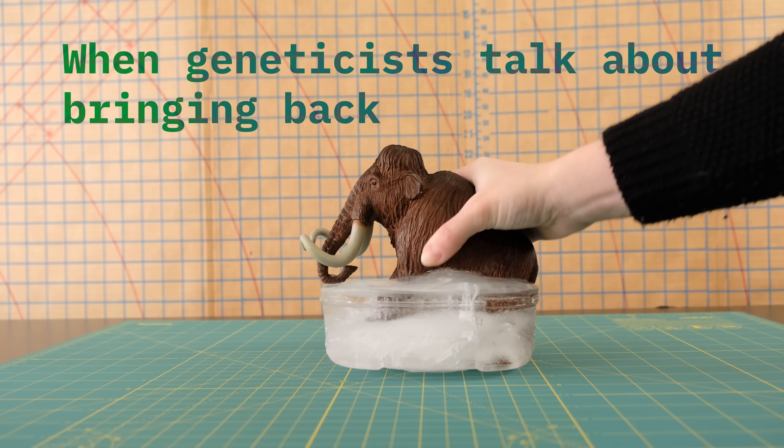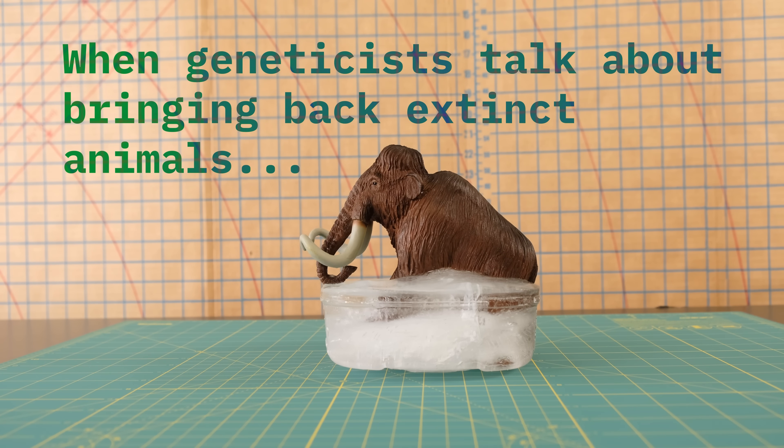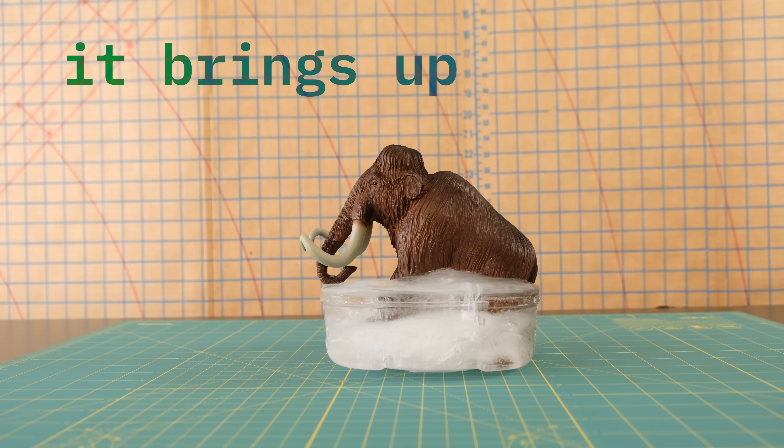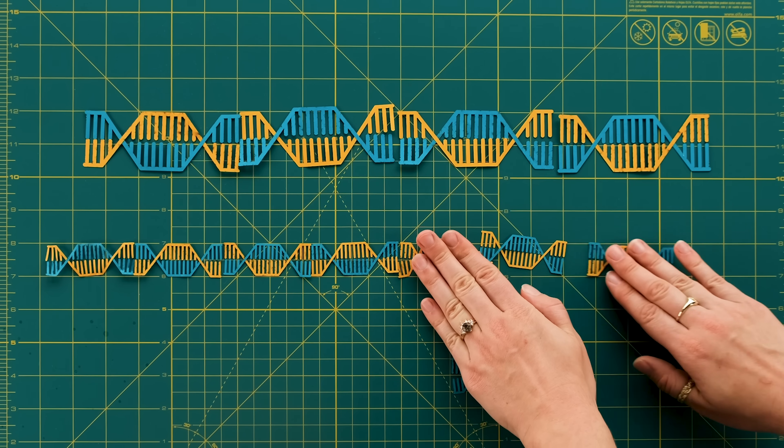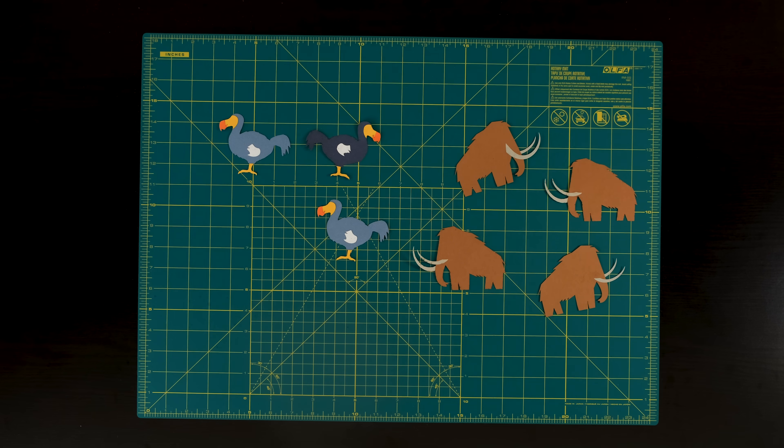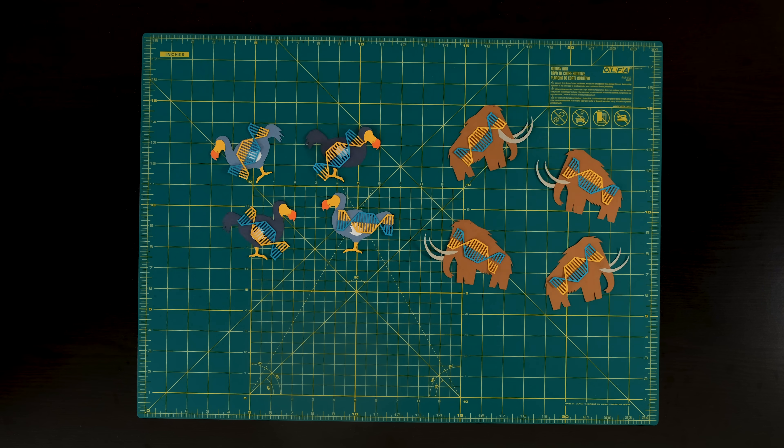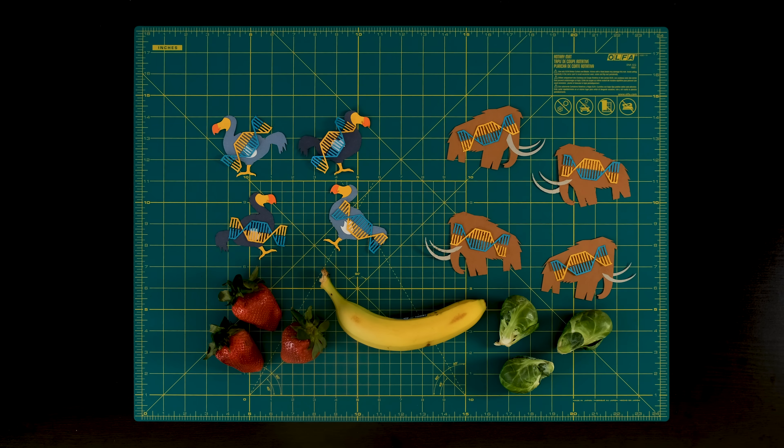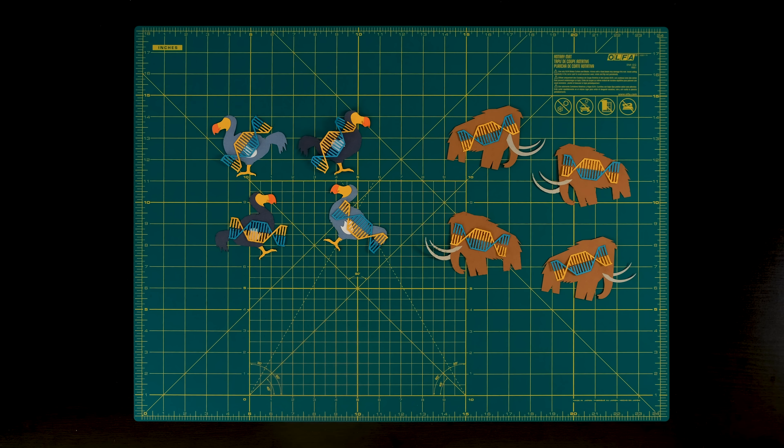When geneticists talk about bringing back extinct animals or even playing around with human genomes, it brings up serious questions. Like how reliable is our ability to dabble with DNA? And why bother with hairy elephants or flightless birds? Genetic tinkering has the potential to cause much more impact than goats on the Galapagos. But we need to figure out a way forward, because by using CRISPR technology to do more than grow better food, we can really tackle some of humanity's impending challenges.